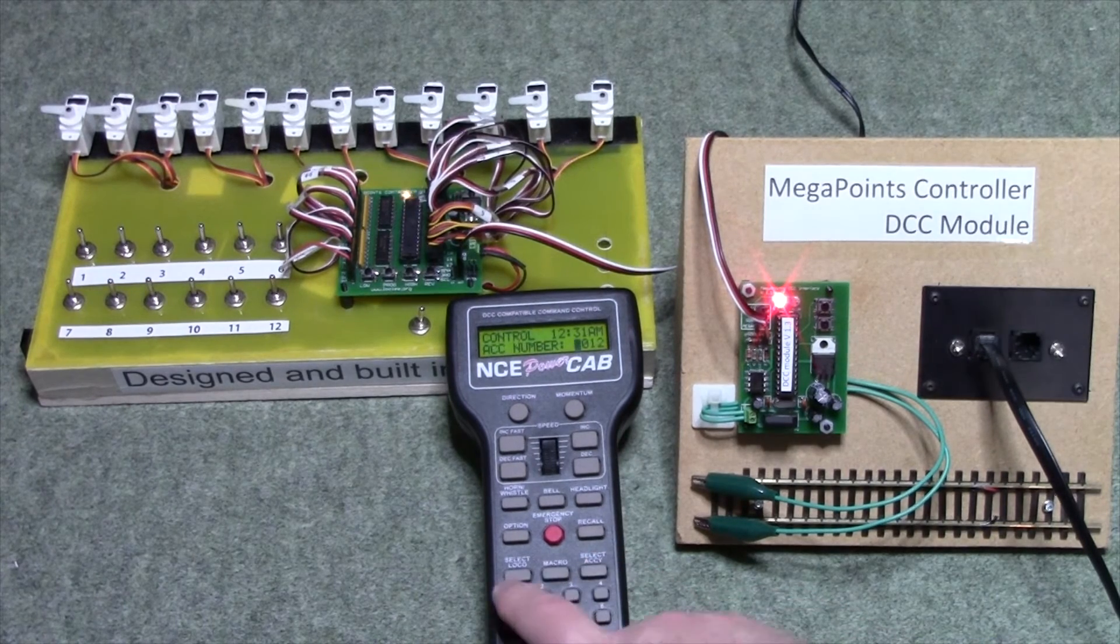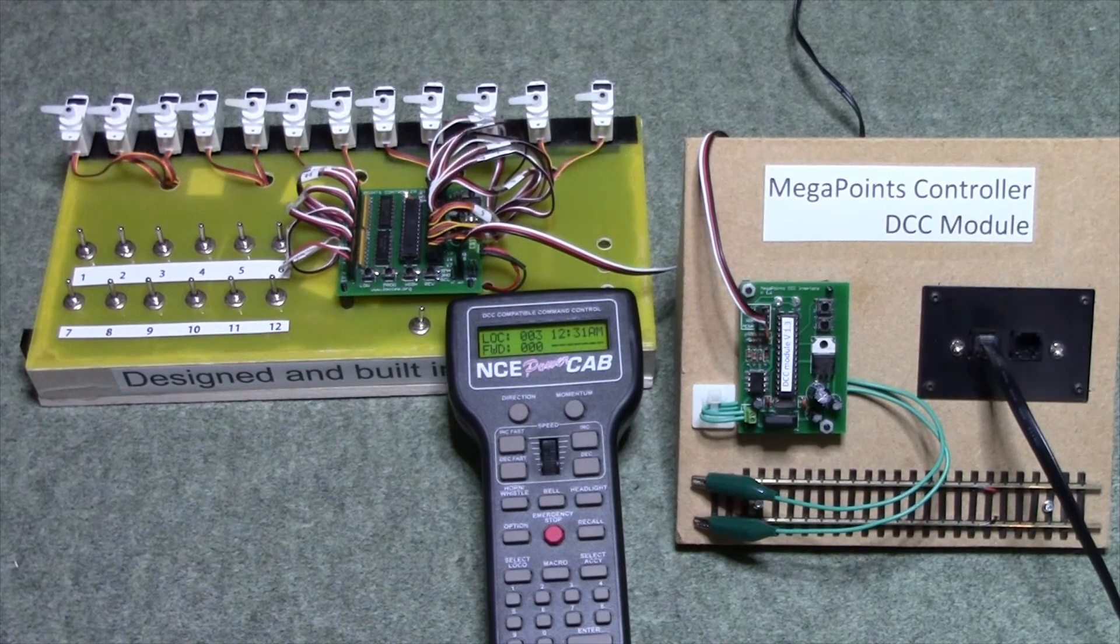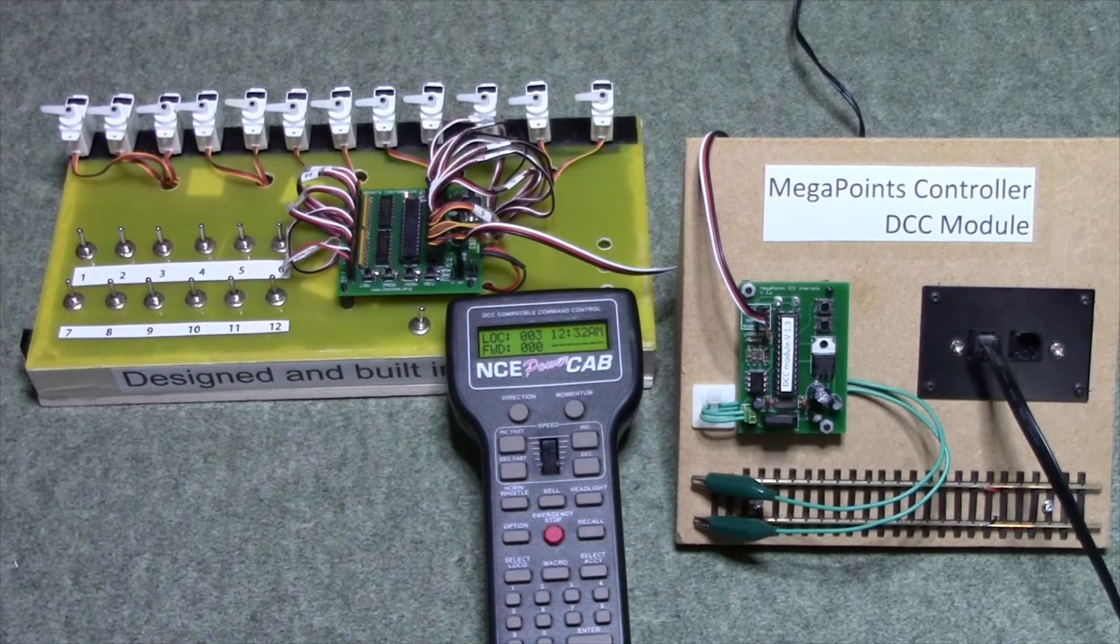Select accessory 150, off. And the light's gone out to indicate it's learnt that address.